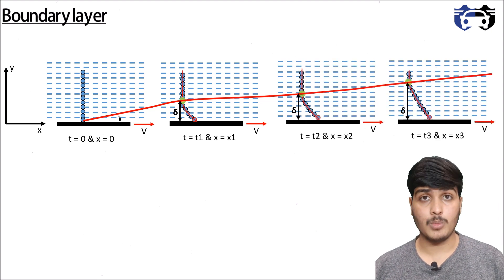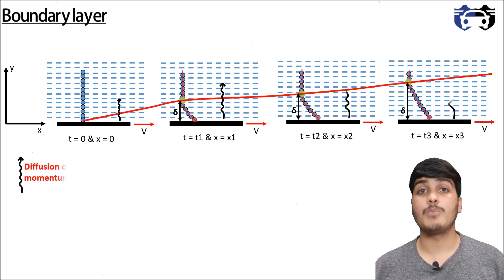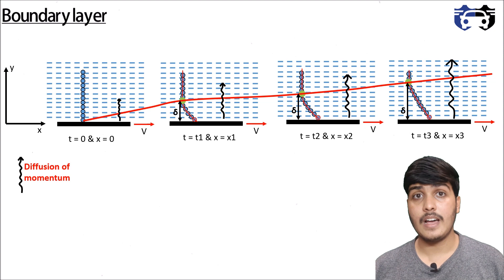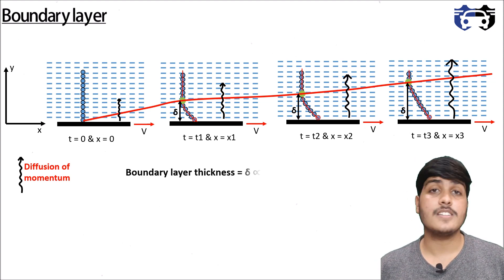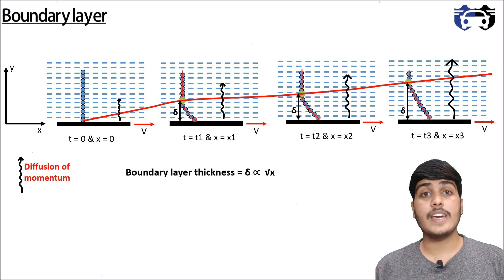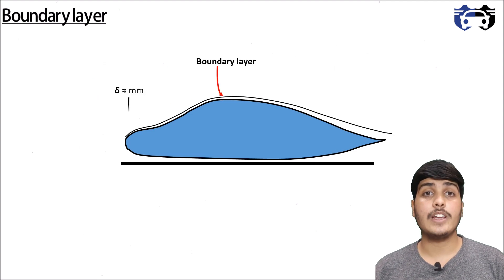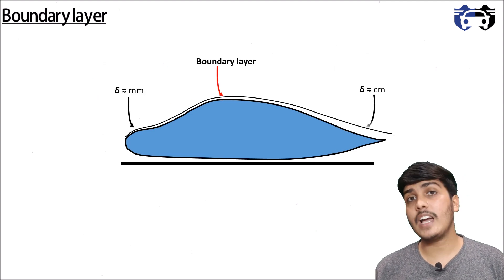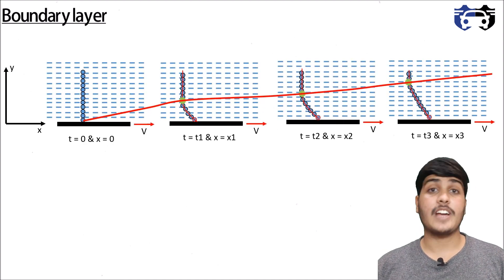The boundary layer thickness increases as you move forward in the x-direction due to diffusion of momentum. As the plate moves forward, momentum of the moving particles transfers in the y-direction, causing the boundary layer thickness to keep increasing. This thickness is directly proportional to the square root of distance x. For a car, the boundary layer can be a few millimeters thick at the front and several centimeters thick toward the back.